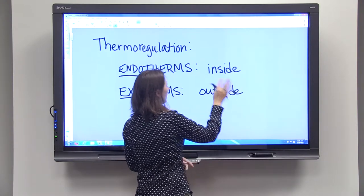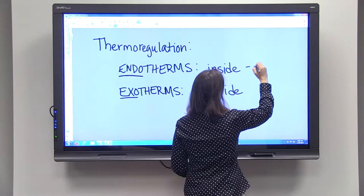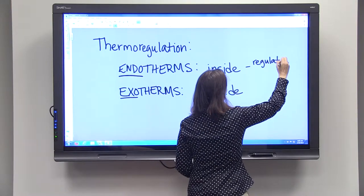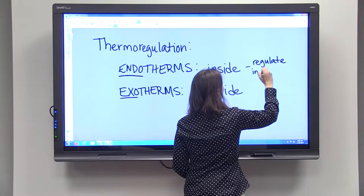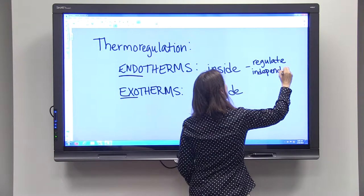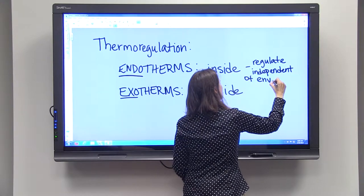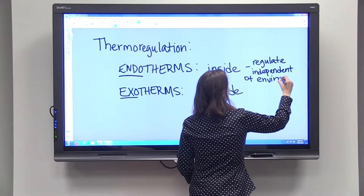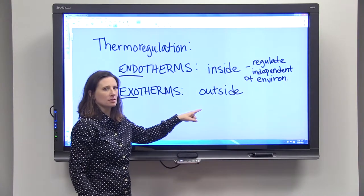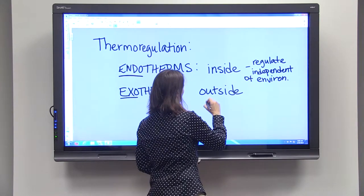So endotherms regulate their body temperature from inside. They regulate temperature independent of environment. Exotherms regulate their temperature based on the environment, based on their outside surroundings.